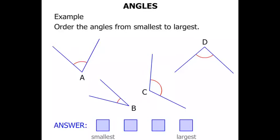Now having a look at the angles there, the amount of turn between each of the arms. Which do you think is the smallest? Well it's angle B. The next smallest will be angle A. And then out of C and D, which one's smaller? Well angle D is smaller than angle C. Angle C is the largest.